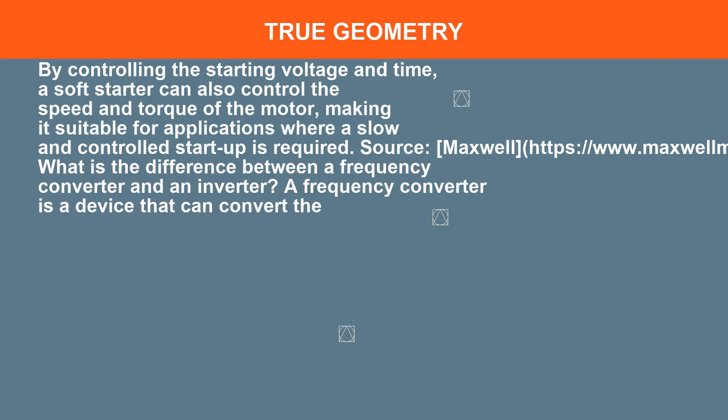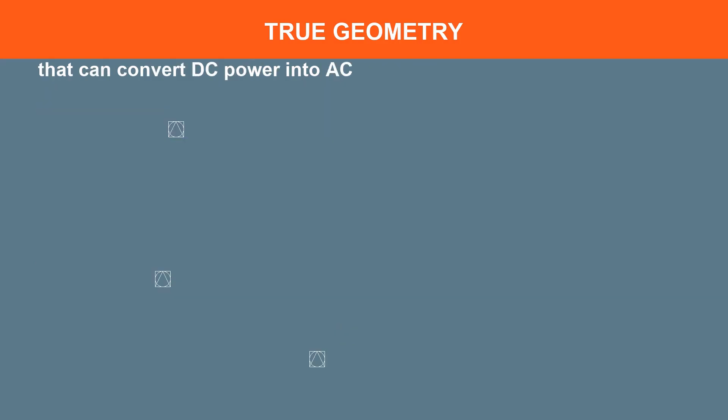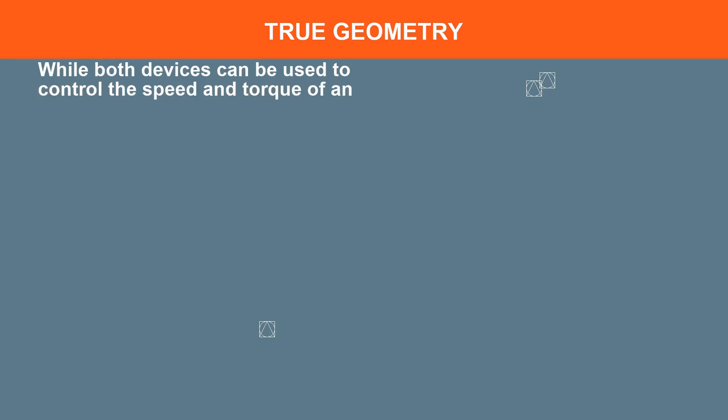What is the difference between a frequency converter and an inverter? A frequency converter can convert AC power supply with or without changing the voltage, and an inverter can convert DC power into AC power at variable frequency and voltage. While both devices can be used to control the speed and torque of an AC motor, they have different applications and advantages depending on the specific requirements of the system.